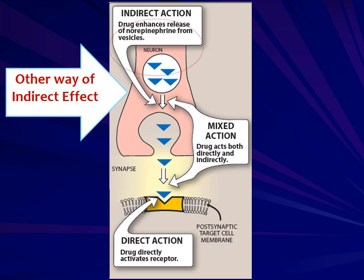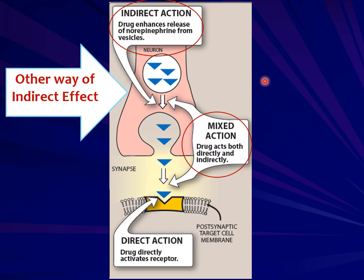Another way to produce the indirect effect is that drugs enhance the release of norepinephrine from stored vesicles, making more neurotransmitter available in the synapse to bind with receptors and show sympathomimetic effects. Additionally, there are some agents which show mixed types of effects — not only do they cause release from stores, but they can also bind directly to receptors. So we have directly acting and indirectly acting sympathomimetics, plus some drugs with mixed activity.